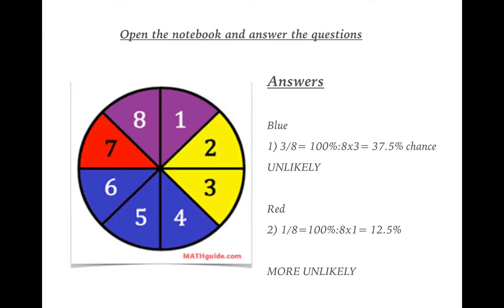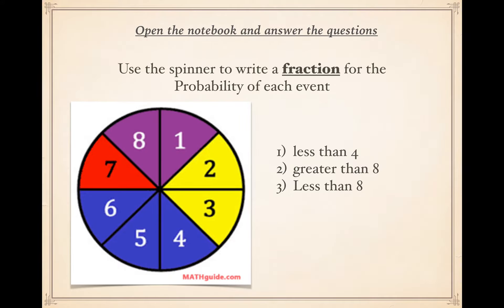For blue: there are three sections of blue out of eight total sections, so we write it as three over eight. That's 37.5 percent — quite unlikely and less than half. For red: there is only one red section out of eight, so one over eight — 12.5 percent. That's even more unlikely. Pause if you need more time.